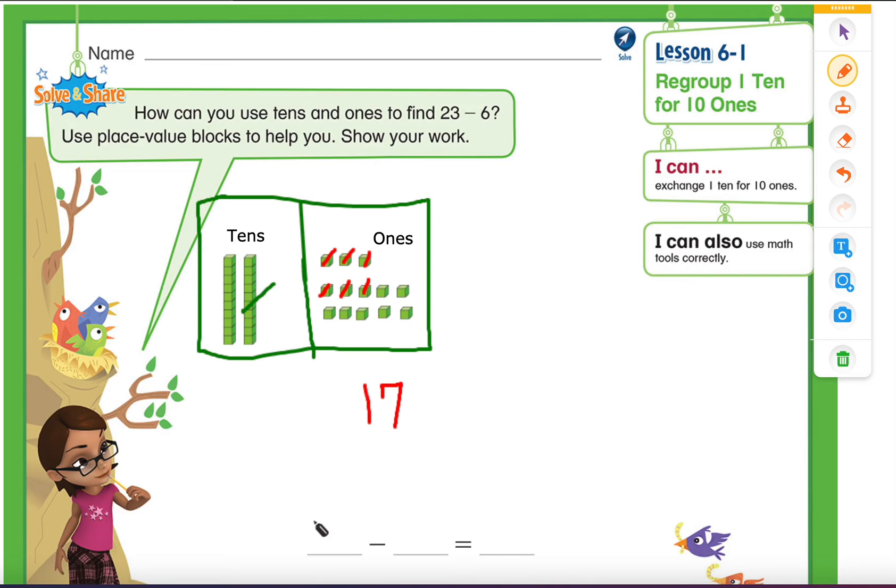So there we have our subtraction equation which is 23 minus 6 equals 17. So in this lesson I have used my math tool correctly and I have exchanged my 1 ten for 10 ones. So you are going to exchange or trade your tens into ones if you do not have enough ones on your first number. So hopefully this was helpful.